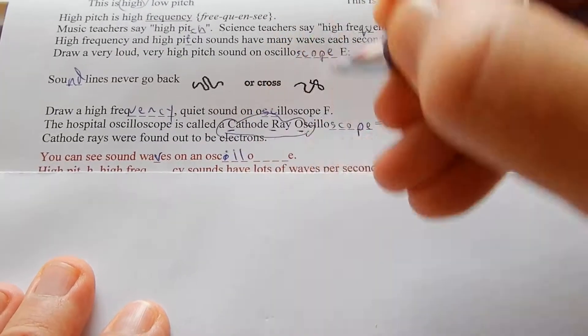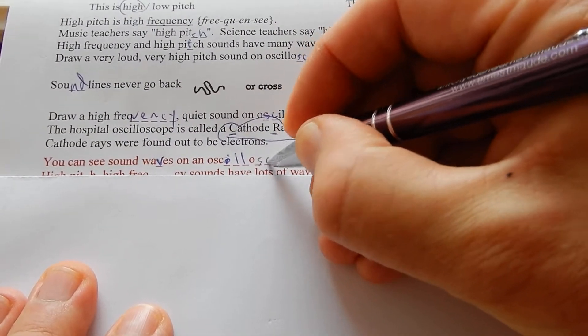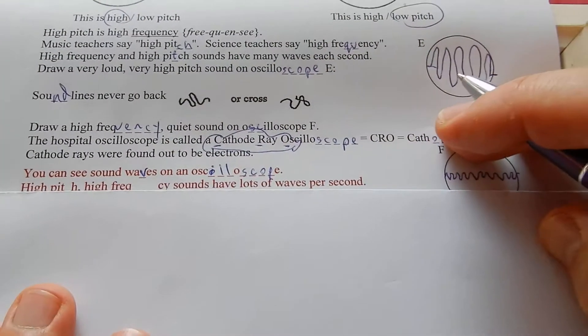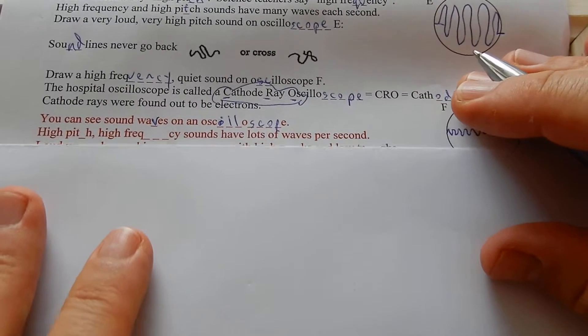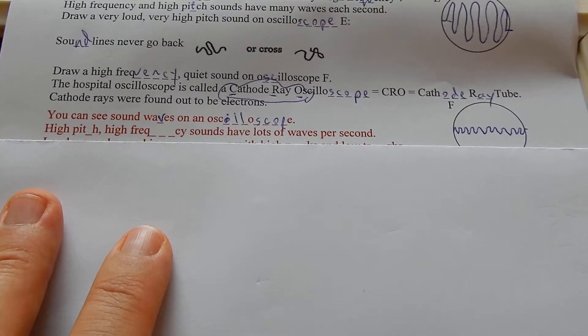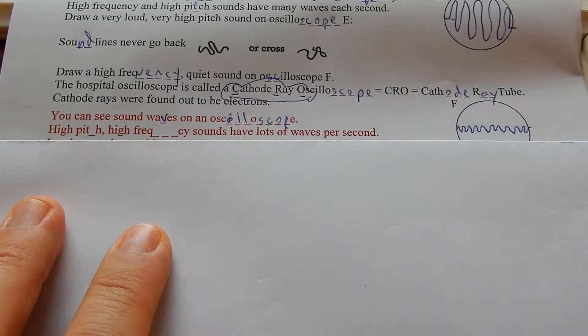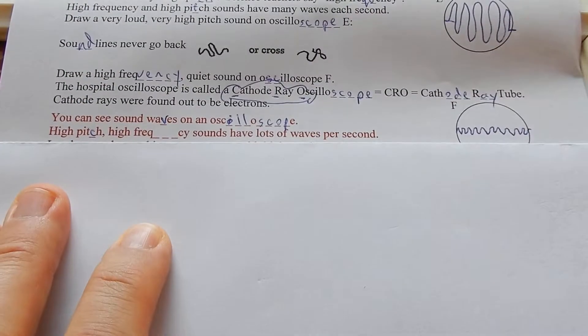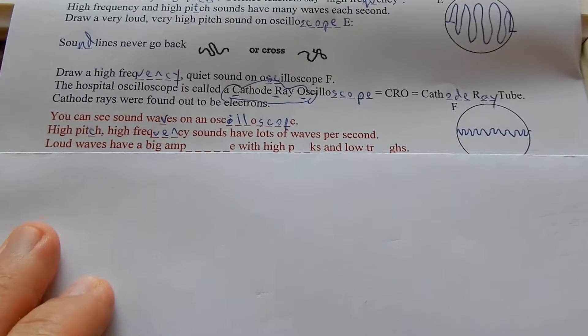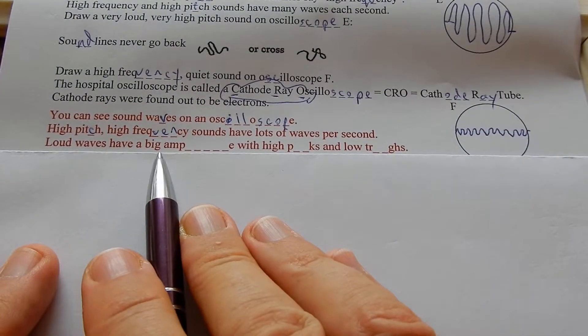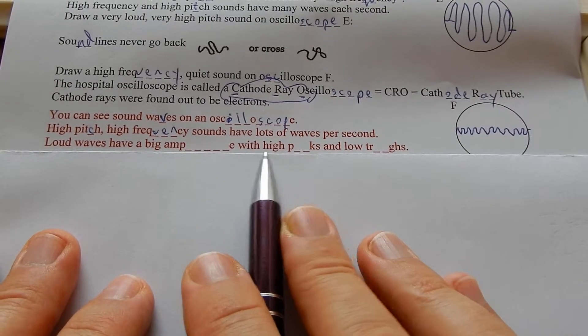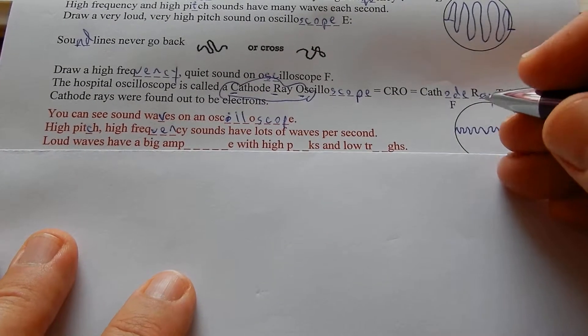High pitch, high frequency sounds have lots of waves per second. Loud waves have a big amplitude with high peaks and low troughs.